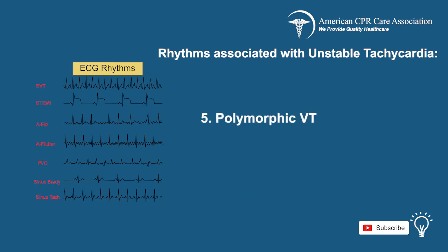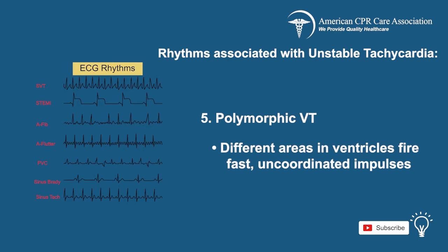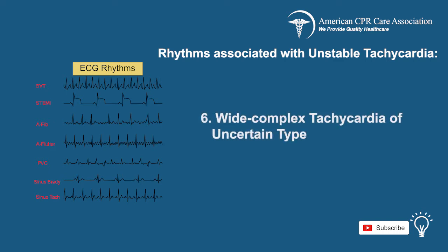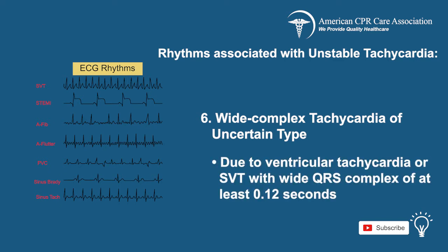Polymorphic VT is when different areas in the ventricles fire fast, uncoordinated impulses. The final rhythm frequently associated with tachycardia is wide complex tachycardia of uncertain type. This is due to ventricular tachycardia or SVT with a wide QRS complex of at least 0.12 seconds.